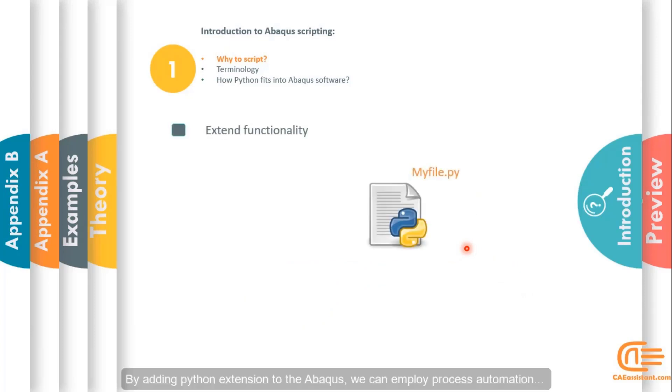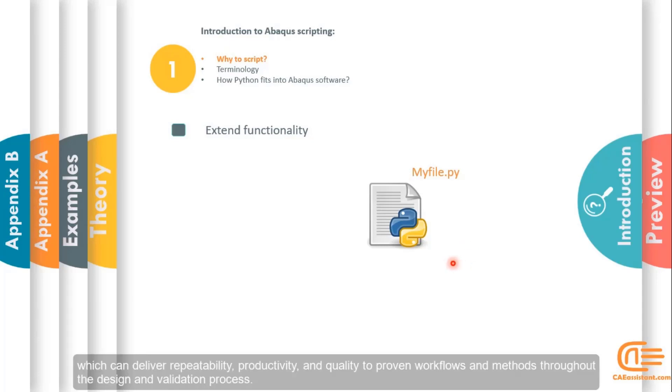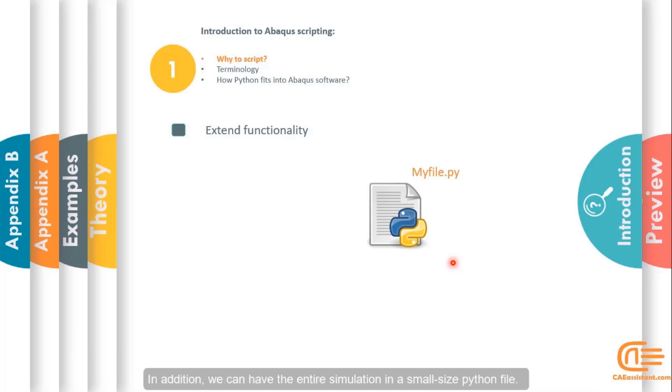By adding Python extension to Abacus, we can employ process automation which can deliver repeatability, productivity, and quality to proven workflow and methods throughout the design and validation process. In addition, we can have the entire simulation in a small-sized Python file.